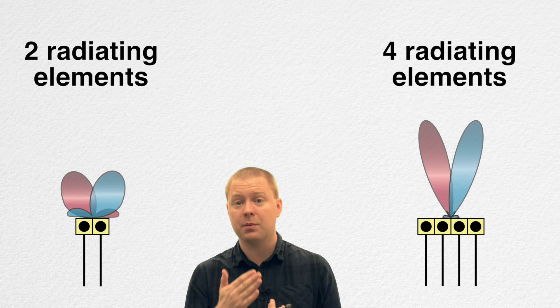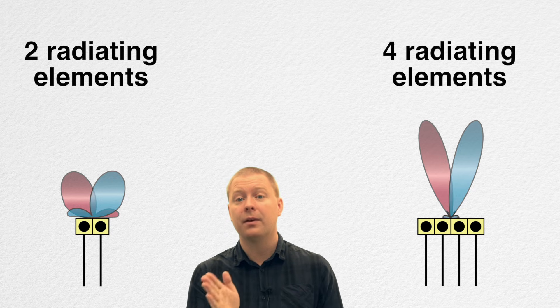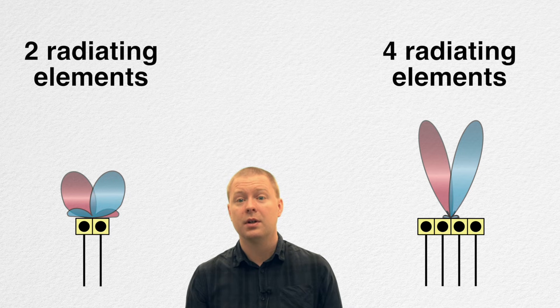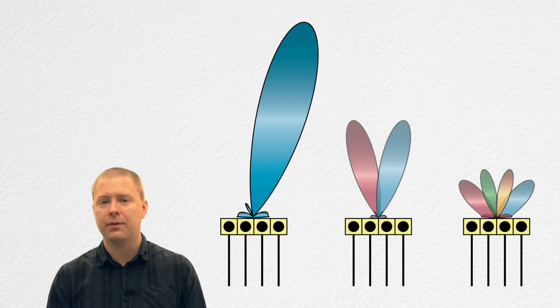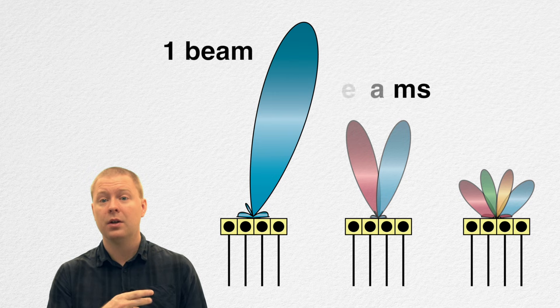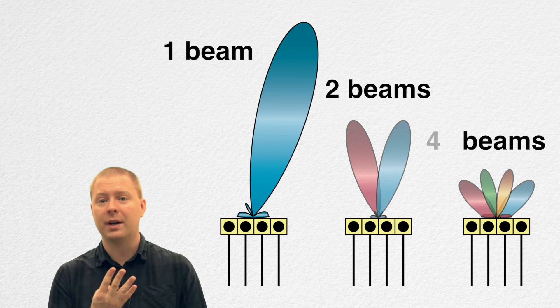The more radiating elements, the more directive the signals are, and therefore you can send these signals to the users with less and less interference between them. You can multiplex as many signals as you have antennas. With four antennas, you can choose between sending one strong beam, two weaker beams, or four even weaker beams.